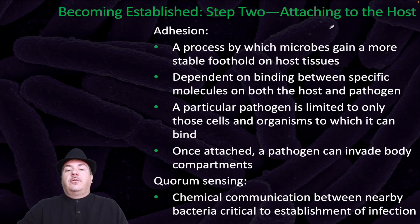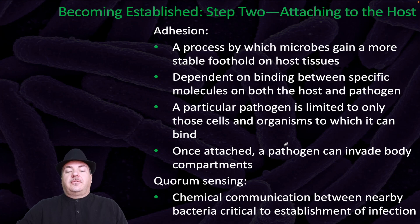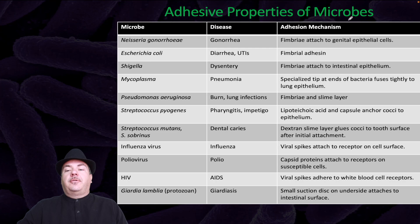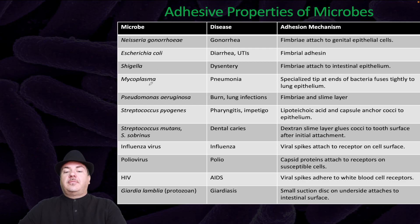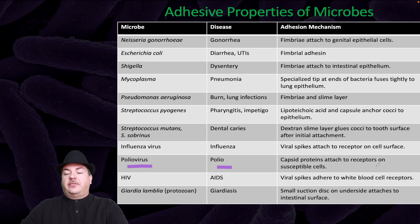Step two is attaching to the host. Adhesion is a process by which microbes gain a more stable foothold on host tissues, dependent on binding between specific molecules on both the host and pathogen. A particular pathogen is limited to only those cells and organs to which it can bind. Once attached, a pathogen can invade body compartments. Quorum sensing is chemical communication between nearby bacteria, which is critical to the establishment of infection. Examples of adhesive properties include fimbriae used by gonorrhea to attach to genital epithelial cells, E. coli to cause diarrhea and UTIs, or Shigella to cause dysentery. Mycoplasma has a specialized tip that adheres tightly to lung epithelium. Influenza virus has viral spikes attaching to receptors on cell surfaces. Poliovirus capsid proteins attach to receptors on susceptible cells, and HIV viral spikes adhere to white blood cell receptors.